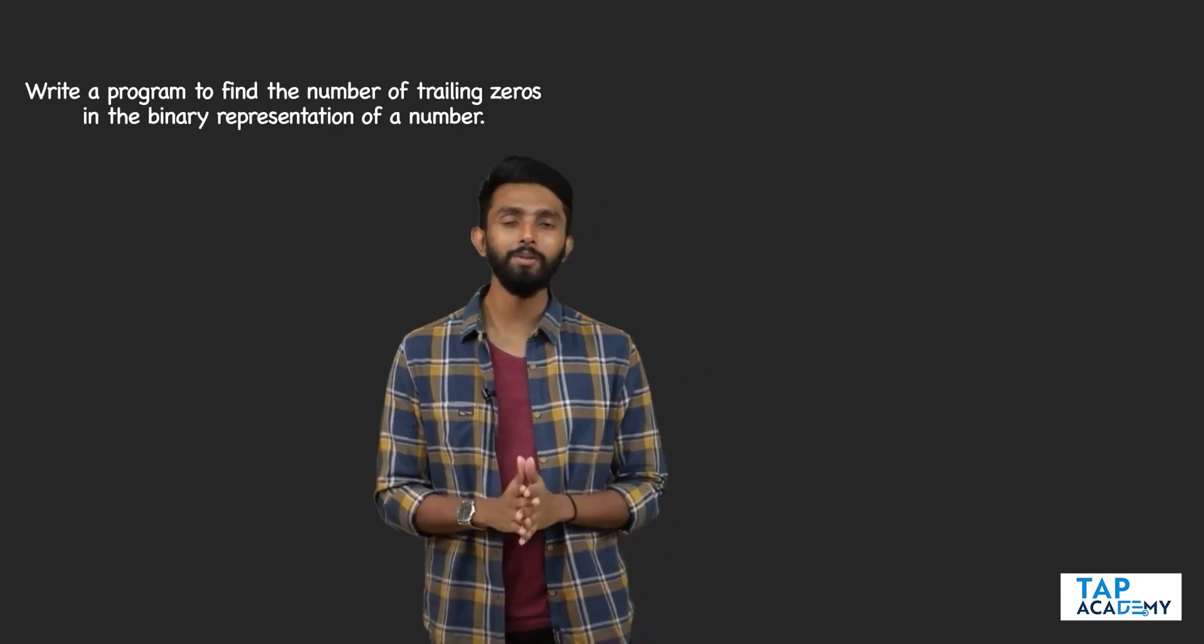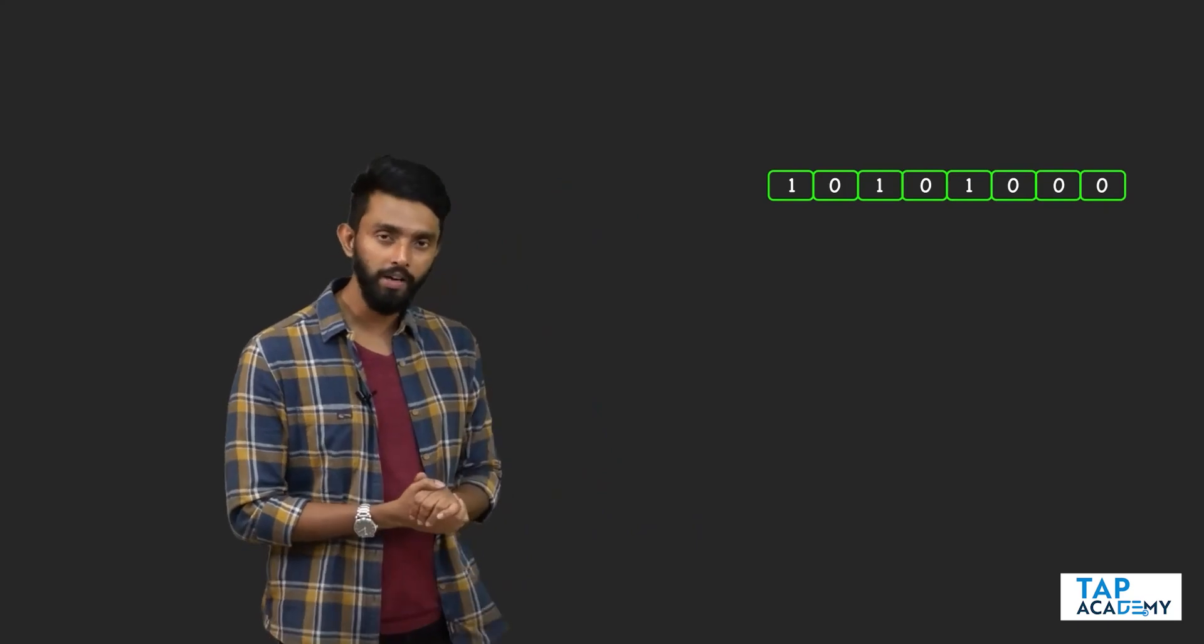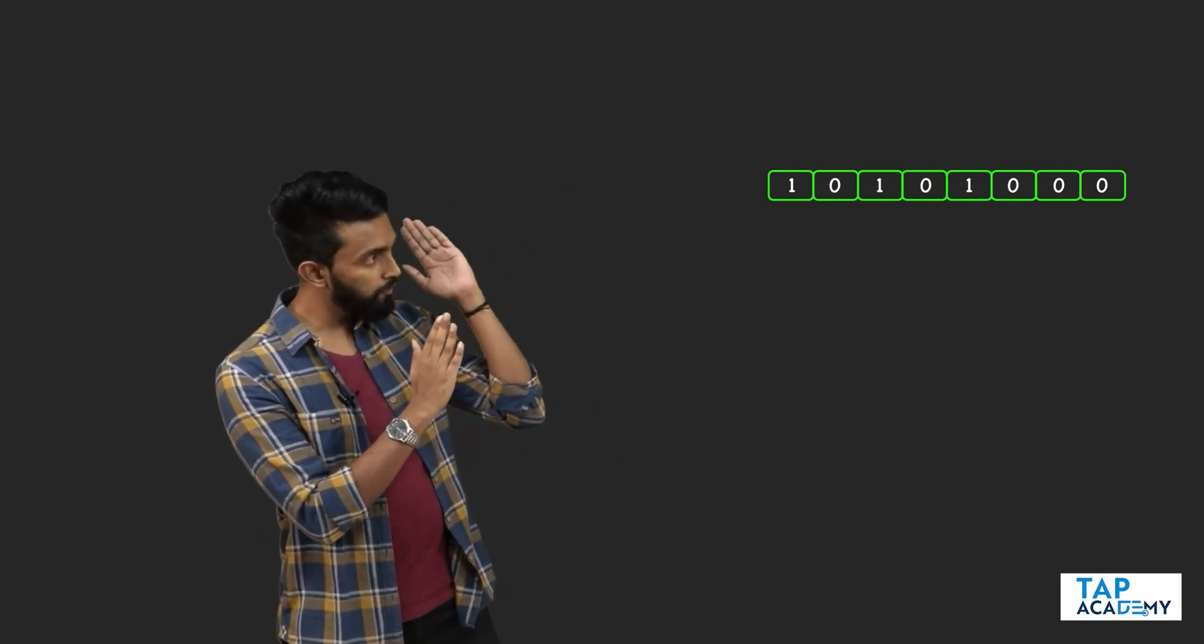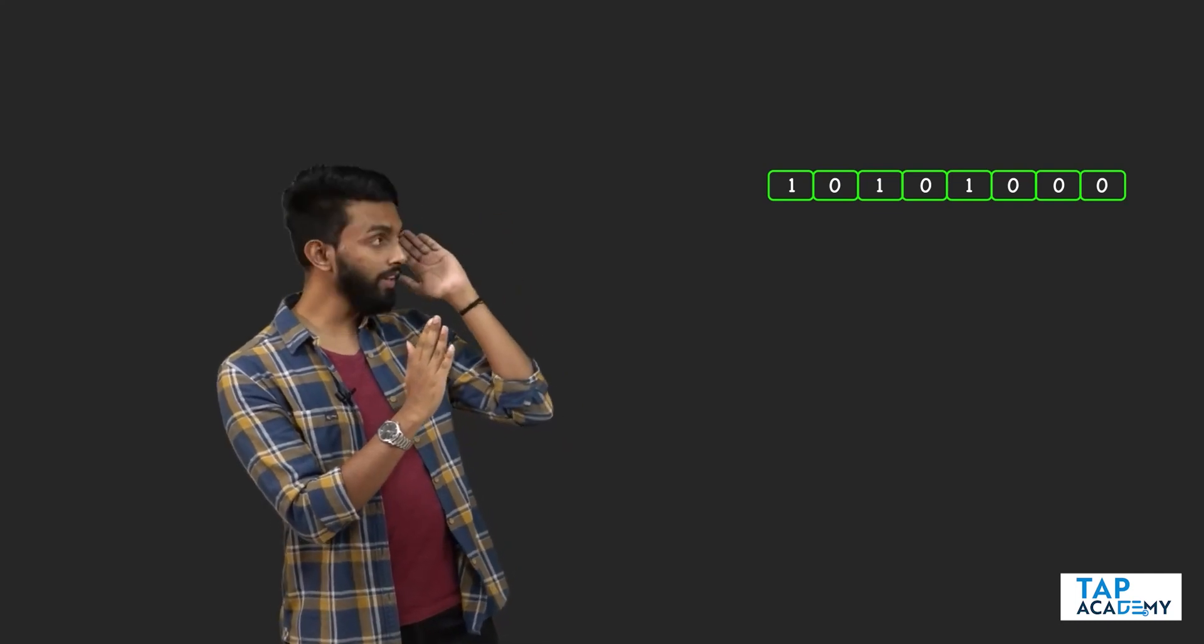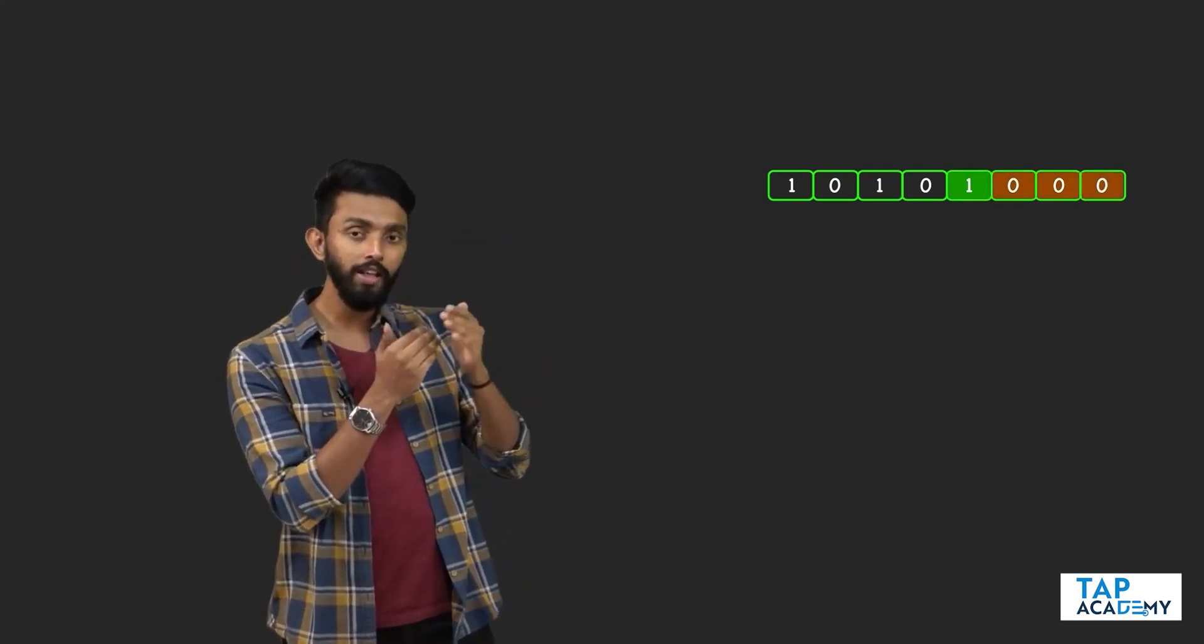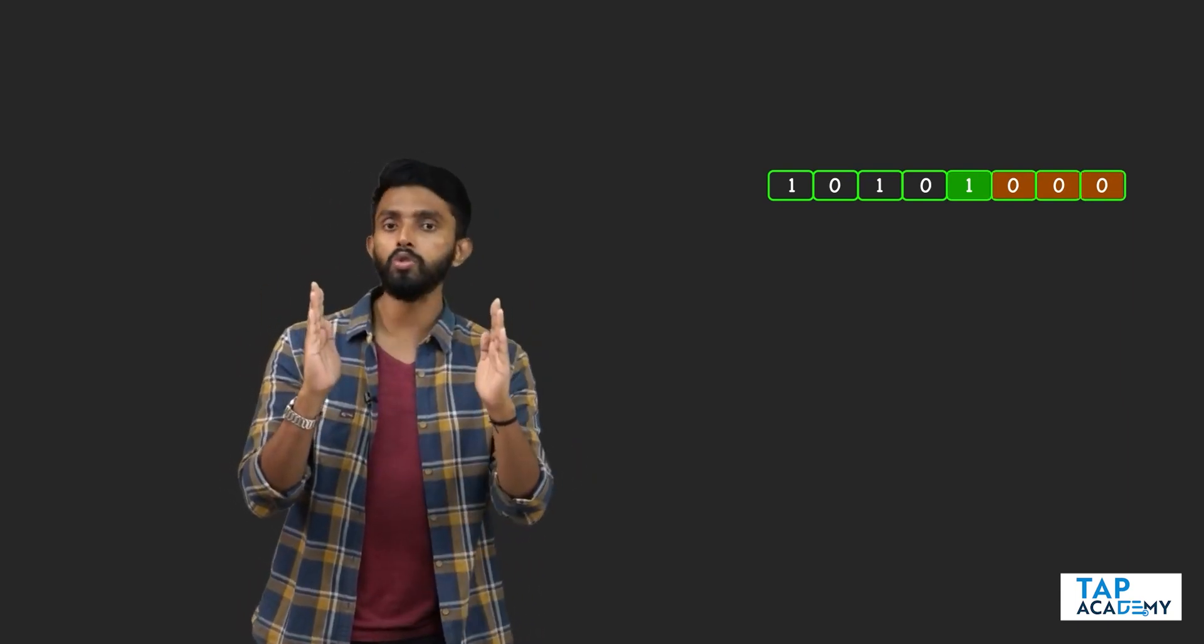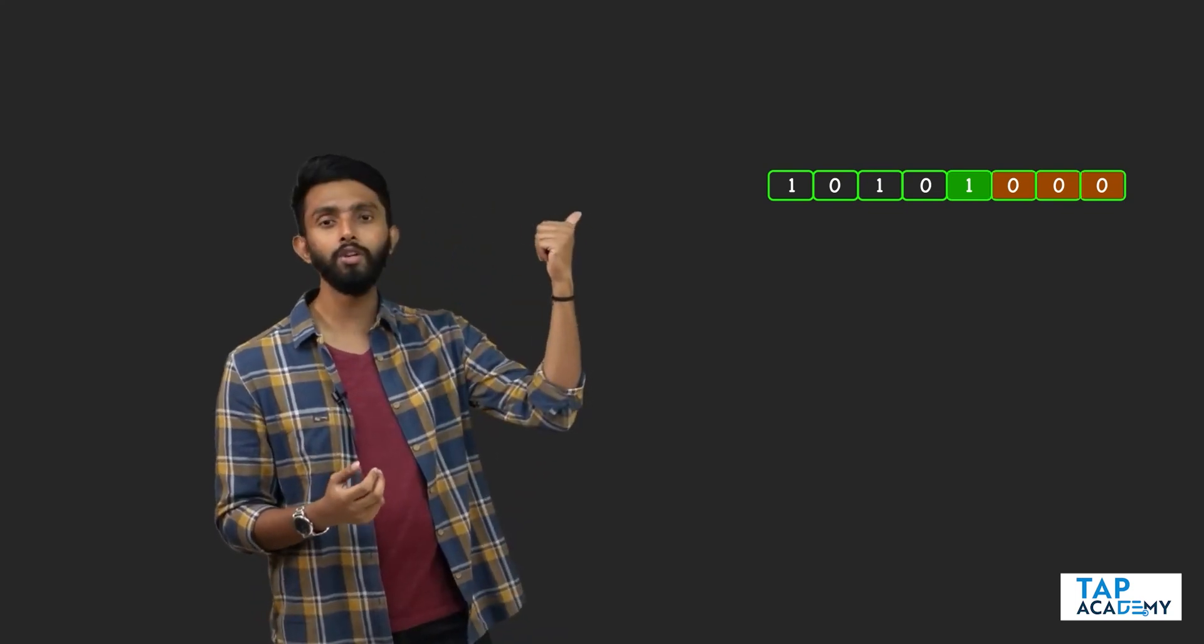The question is to find the number of trailing zeros in the binary representation of a number. What does this mean? This is a binary number. Trailing zeros means look at the rightmost set bit, that is the one, and after that how many zeros are there. Those are the trailing zeros.